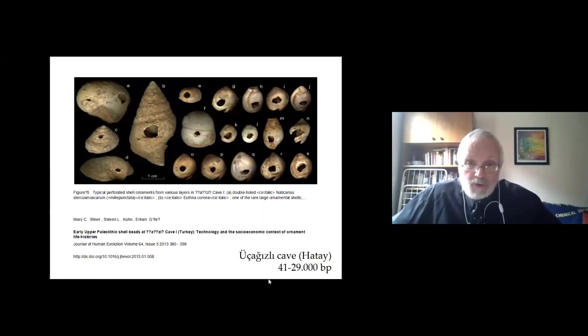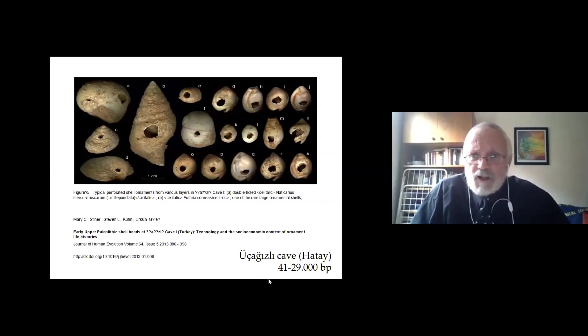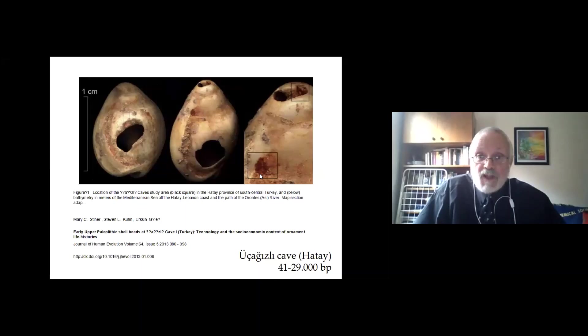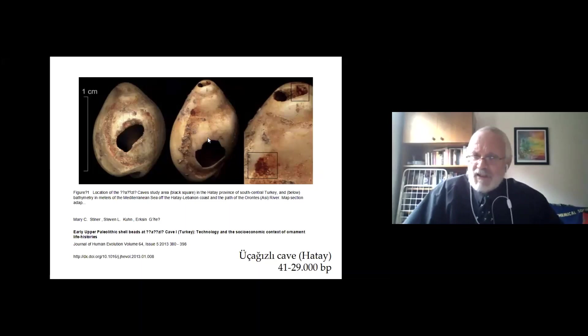And then we have a few from Uchazle Cave in Hatay, dated between 41,000 and 29,000 BP — this is now known as the initial Upper Paleolithic. You can't see much on some of these, although one here shows a little bit of pigment left on it. The second slide shows exactly the same type of thing, with a great deal of pigment visible here and here. This is the same shell, the same type of phenomenon. Ochre was used in life, on the body.